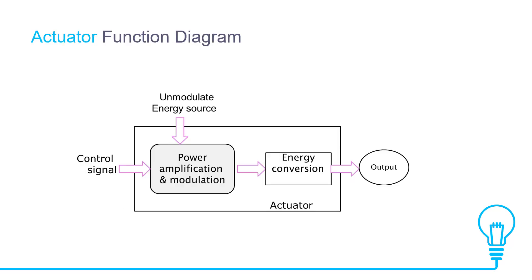Let's see the actuator function diagram explanation. In this diagram, a control signal as input goes to power amplification and modulation, where unmodulated energy sources merge together. After energy conversion, the result forms as output.